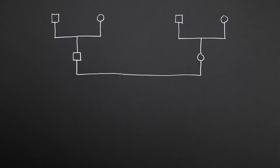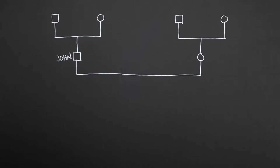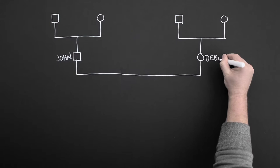To begin, write your father's name next to the square on the left-hand side of your genogram. If you're adopted, write your adoptive father's name or that of the primary male caregiver. On the right-hand side, write in your mother's name next to the circle.